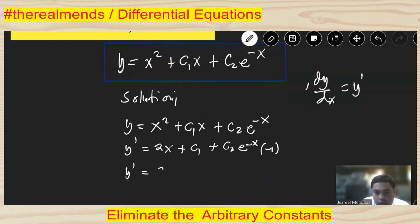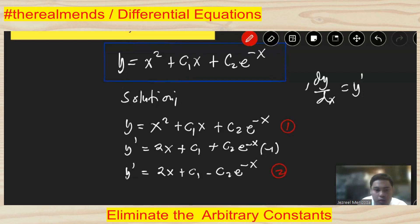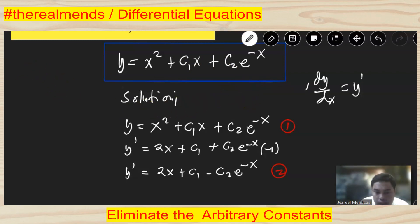So y prime equals 2x plus c1 minus c2·e to the negative x. This is equation number one (original), equation number two (first derivative), and we will form equation number three for the second derivative.